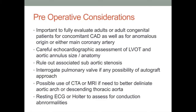Several preoperative considerations are critical to a successful surgical intervention regarding aortic root enlargement. It is important to fully evaluate adult patients for coronary artery disease prior to intervention. In particular, a clear understanding of the left anterior descending artery anatomy and the location of the first septal branch is critical, especially in operative strategies involving harvesting and the use of a pulmonary autograft for aortic valve replacement. Careful review of the preoperative echocardiographic evaluation will allow for strategies to be devised to avoid patient prosthesis mismatch.